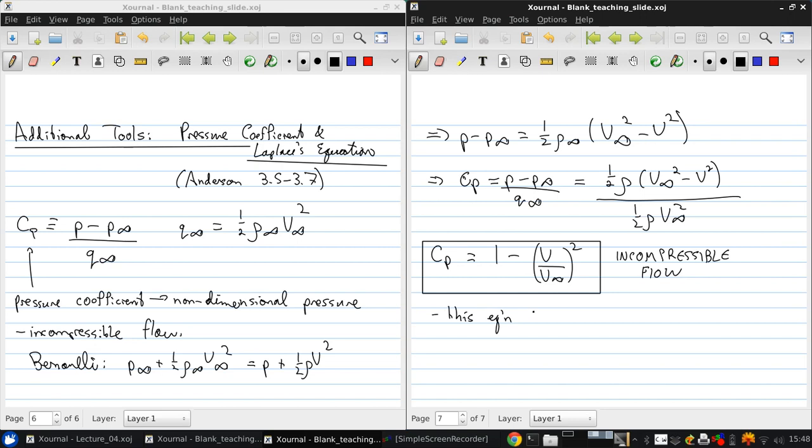This equation tells us that at a stagnation point, where V equals zero by definition, we always have Cp equals one. And you can see that if V is zero, we get one minus zero, Cp is one.